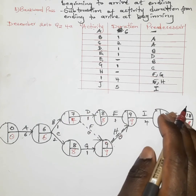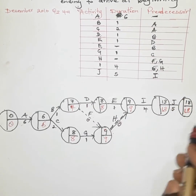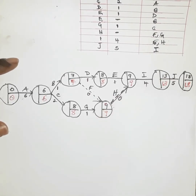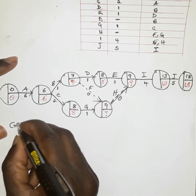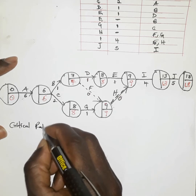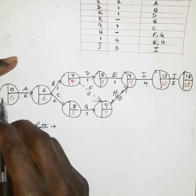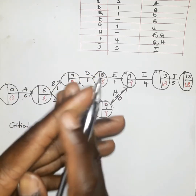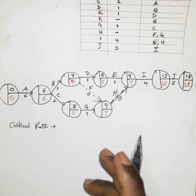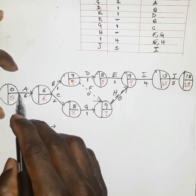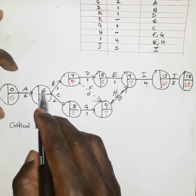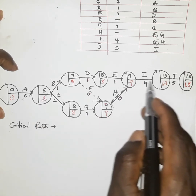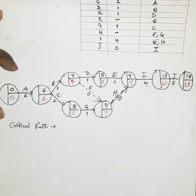We have actually proven our network diagram — that is how to do the forward pass and the backward pass. Now you will be asked about the critical path. The critical path refers to the longest duration which will be undertaken in the whole project. There are two ways to determine it: one is by looking at those activities which have the same starting time and ending time — all these activities have the same starting time and ending time.